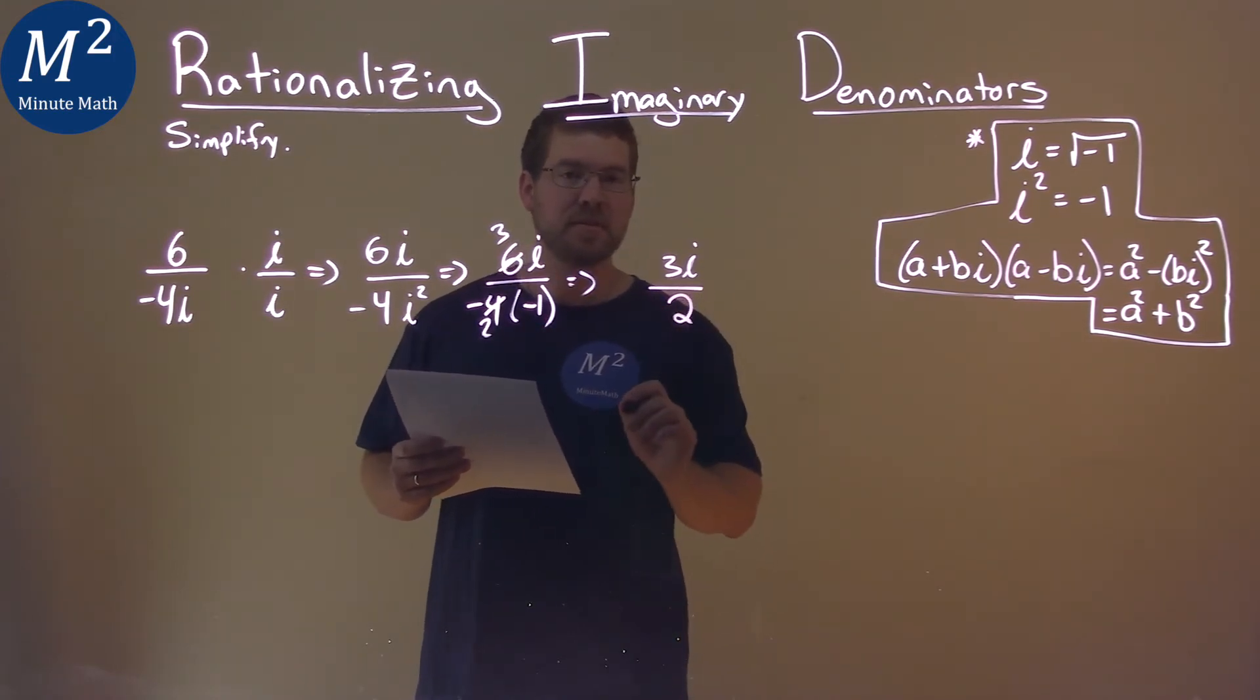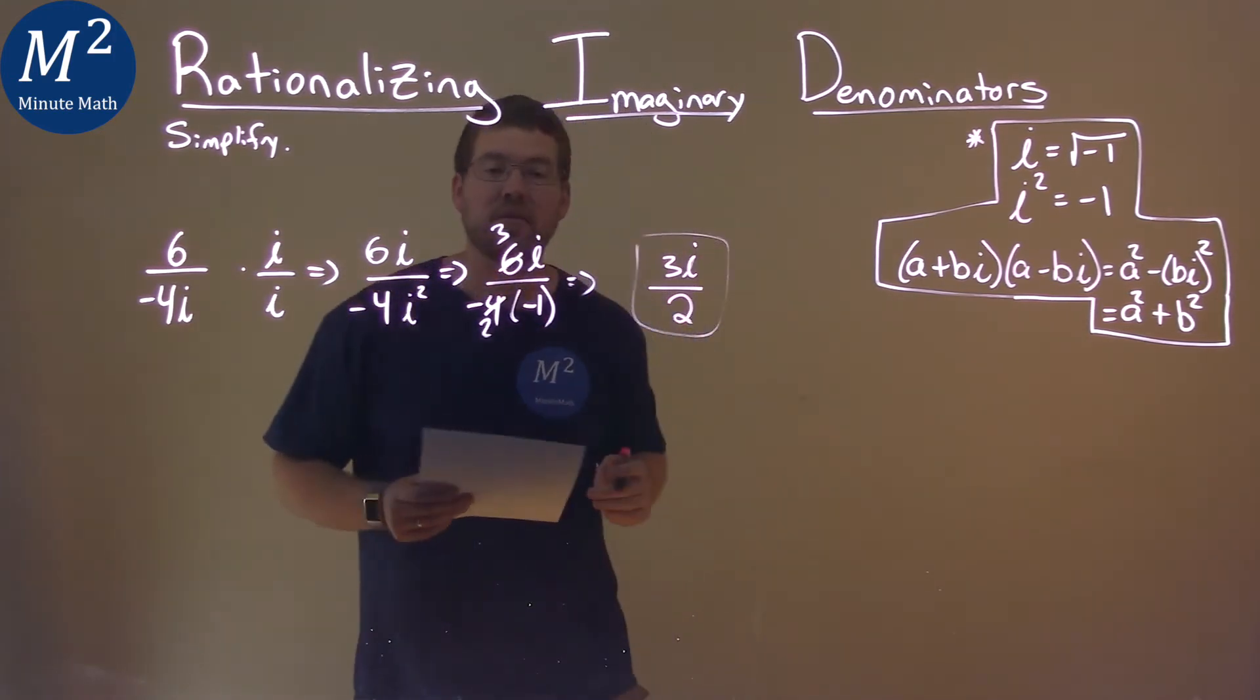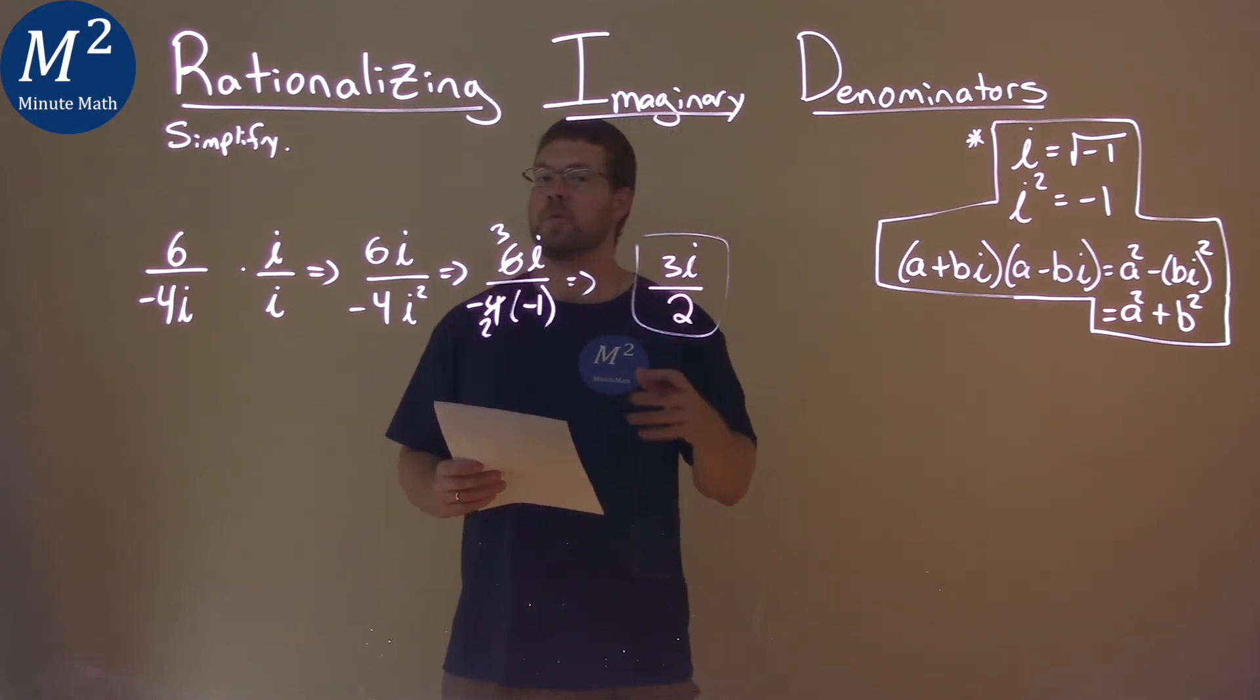We divide that by 2, and that's it. Our final answer here is 3i over 2.